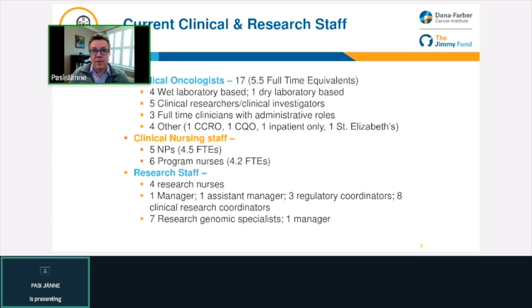Our service wouldn't be possible without clinical nursing support — we have five nurse practitioners and six program nurses who help in various clinical aspects, from first meeting patients who come into the clinic through longitudinal care. We could not do any of this without our research staff, including research nurses, clinical managers, regulatory coordinators, clinical research coordinators, and genomic specialists, all of whom help in the research aspect of our clinical care — especially in genotype-directed care, which is such a big part of our current clinical effort and portfolio.